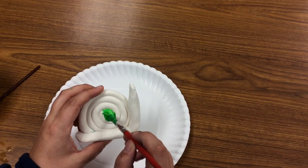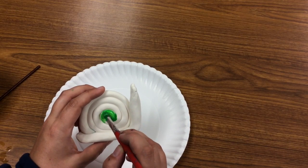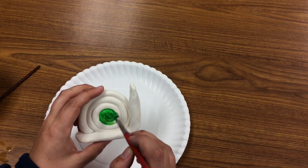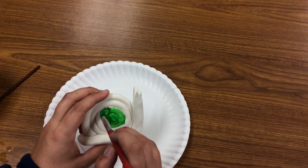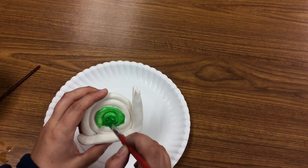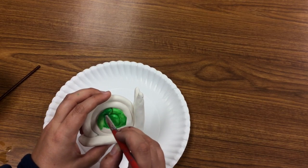Notice how I have put a paper plate under my snail so that I do not accidentally paint my table. I am bringing my paintbrush all the way around that spiral, nice and steady, taking my time.